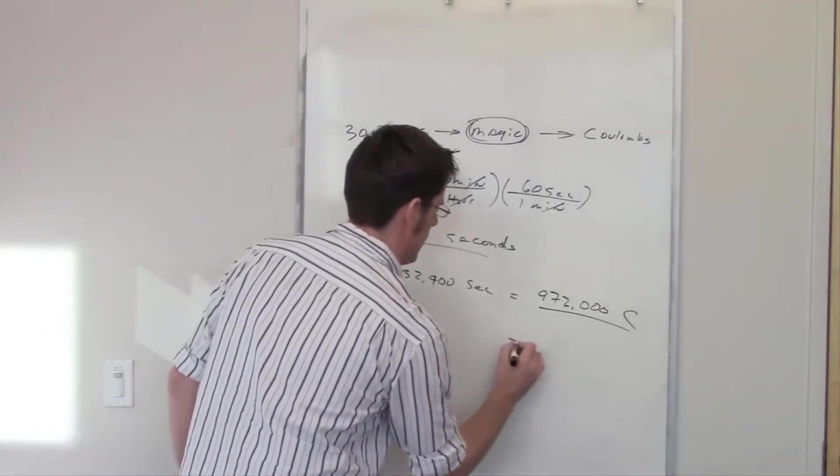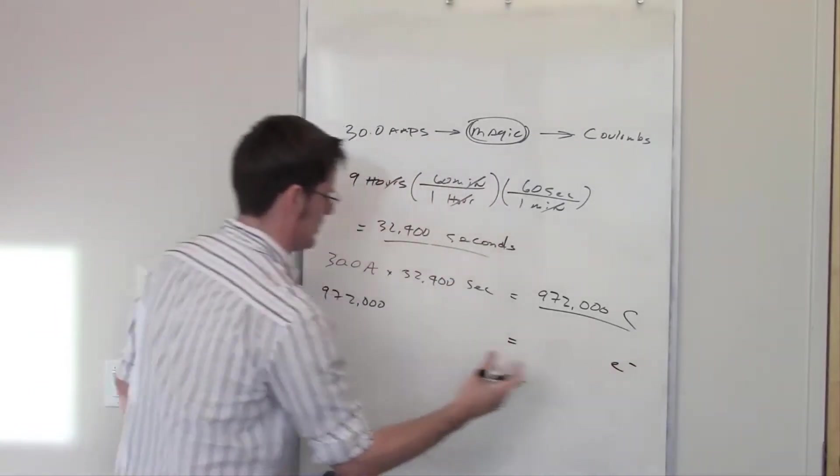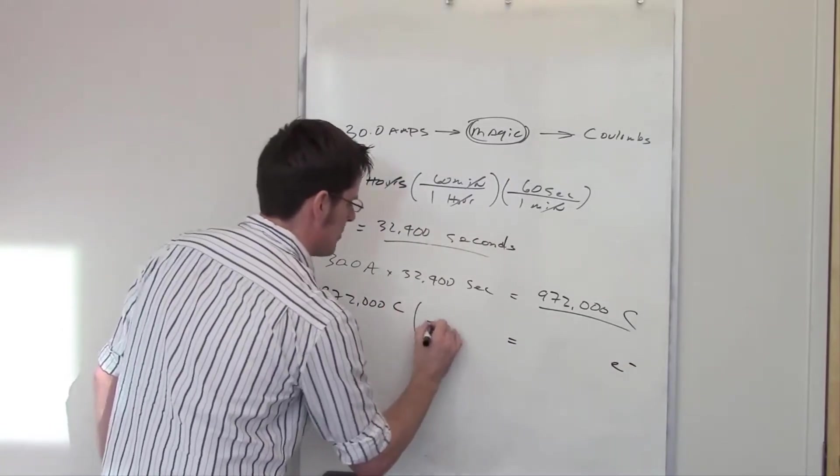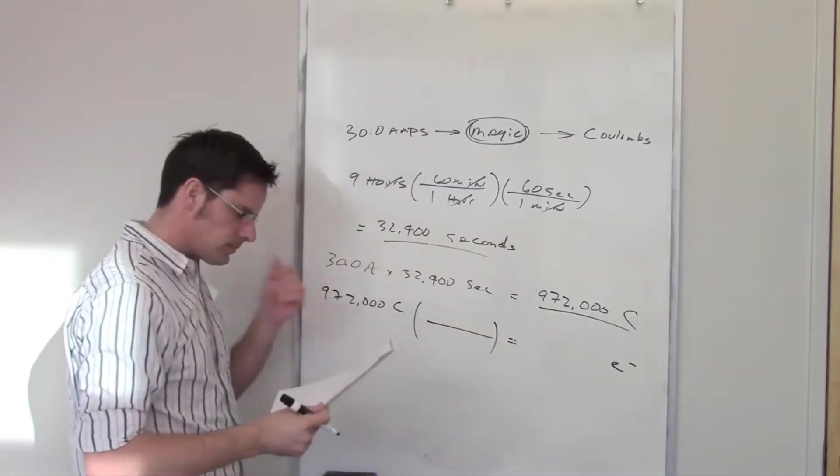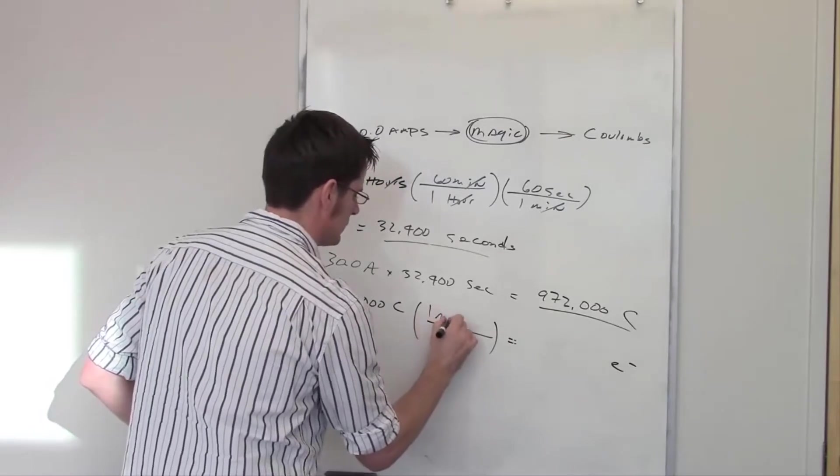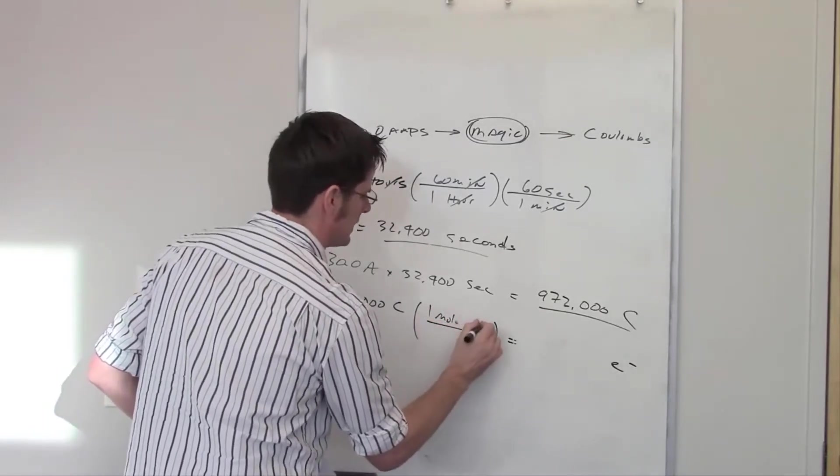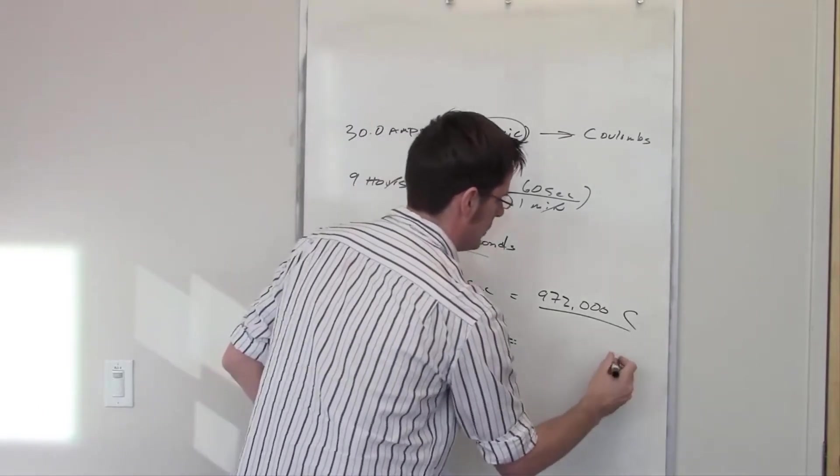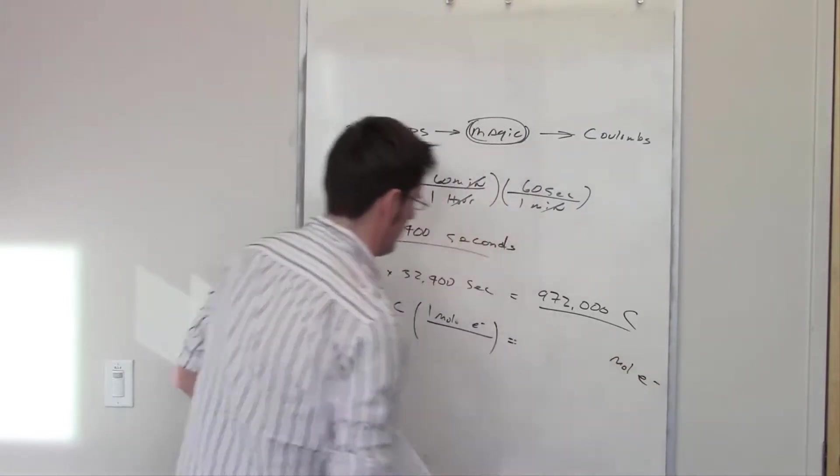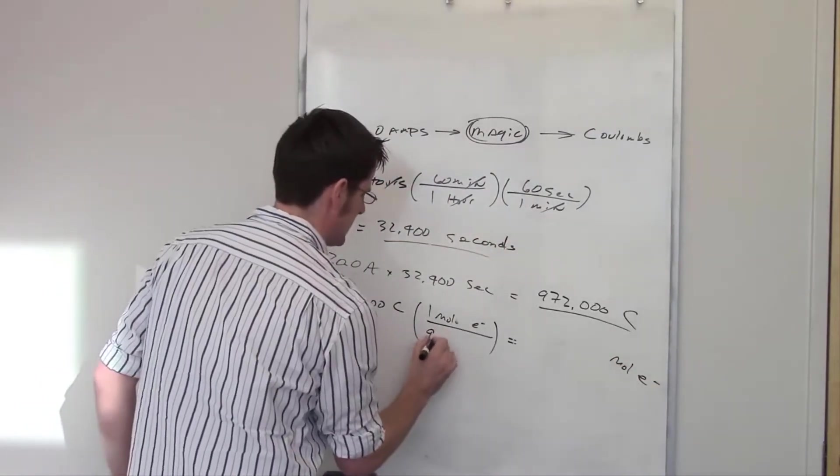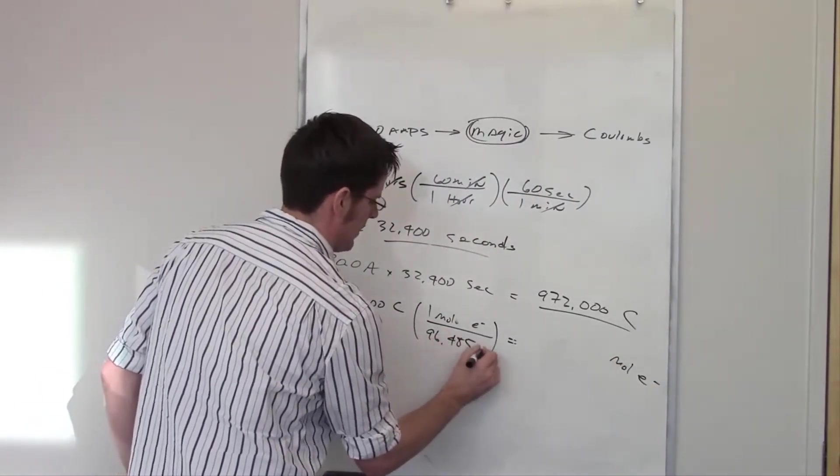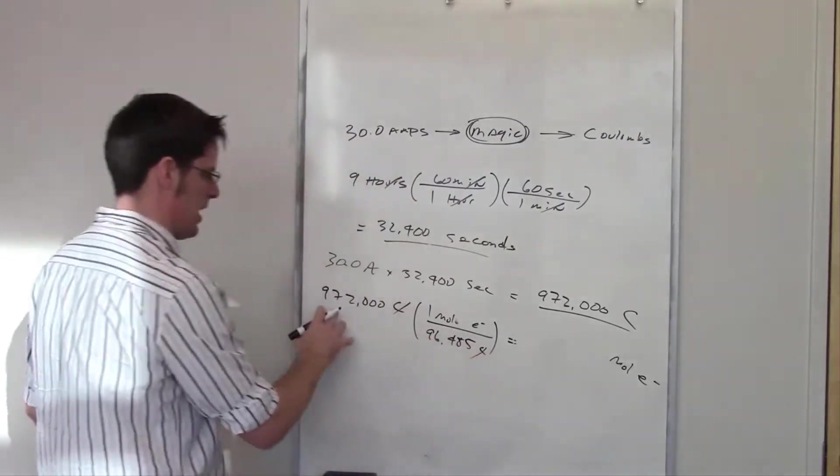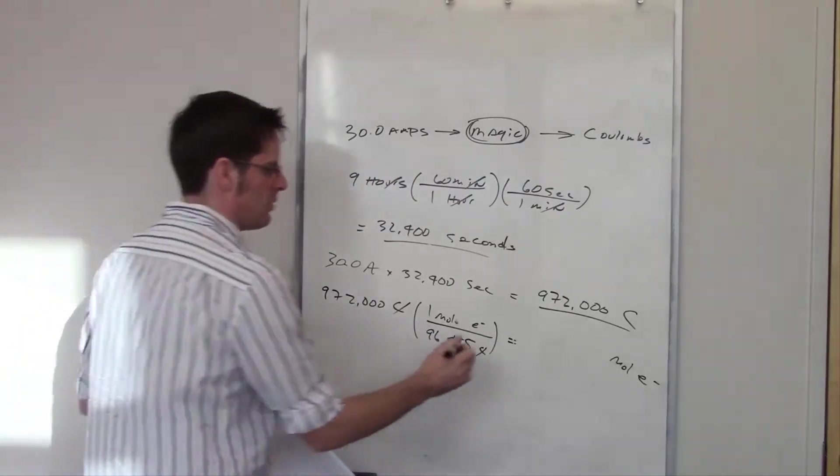So I've got 972,000 coulombs, and I want to do dimensional analysis to convert that into electrons. So I want to do something where I get electrons out the other side. I should remember then that one mole of electrons—I'm trying to convert into moles of electrons to clarify—